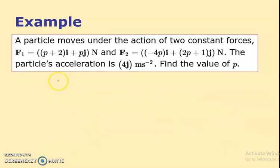Next question. A particle moves under the action of two constant forces F1 and F2. The particle's acceleration is 4j. Find the value of p.